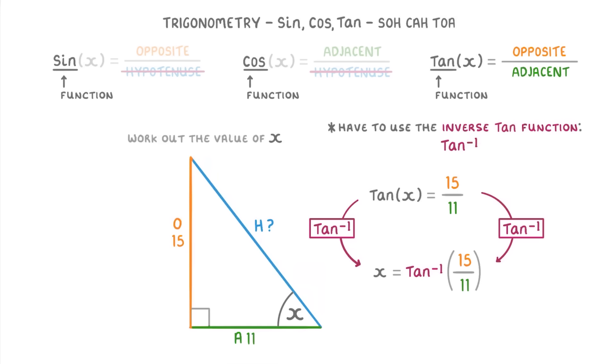And then all you have to do is put that into your calculator and you should get 53.7. And remember, because we're working out the angle of X, it's 53.7 degrees. And that's it, that's our answer.